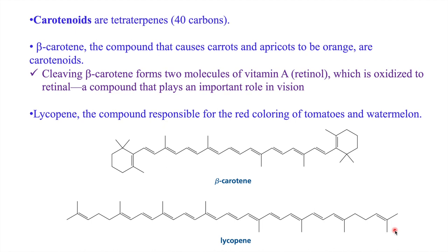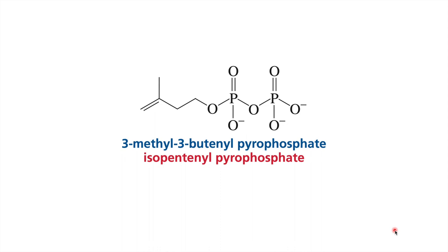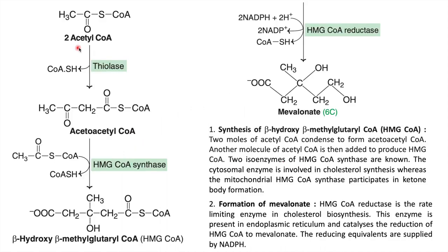In lycopene's structure you can count 8 methyl groups: 8 multiplied by 5 gives 40 carbons, meaning eight isoprene units are present. Isopentenyl pyrophosphate is the basic unit from which all terpenes and cholesterol synthesis happens. Now we will study how isopentenyl pyrophosphate is formed in the biosynthesis process. Two acetyl coenzyme A units combine: one acetyl group joins with another to give acetoacetyl coenzyme A.